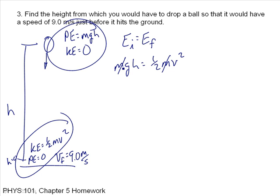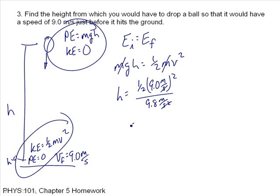The masses cancel, and I solve for h. h equals one-half times v squared — that's 9 squared — divided by g, which is 9.8. Checking units: seconds squared cancels, meter squared in the numerator divided by meter in the denominator gives meters. So h equals 4.1 meters.